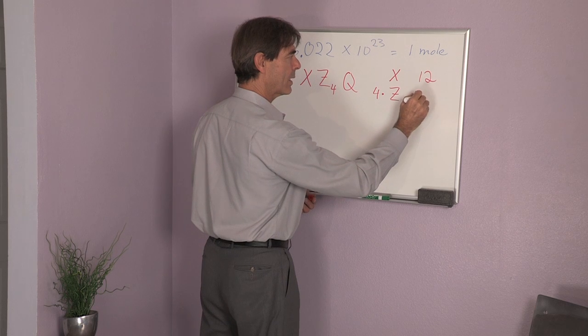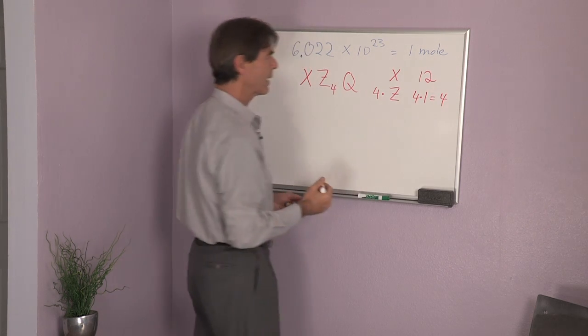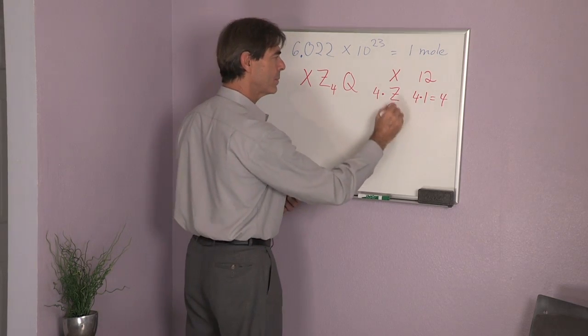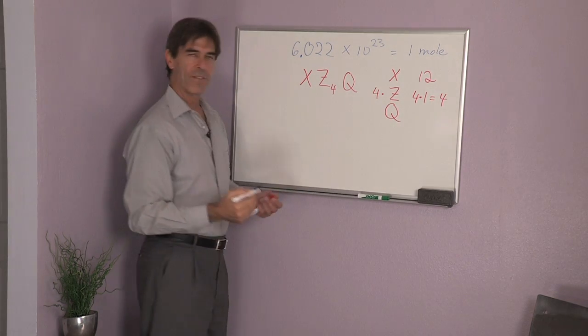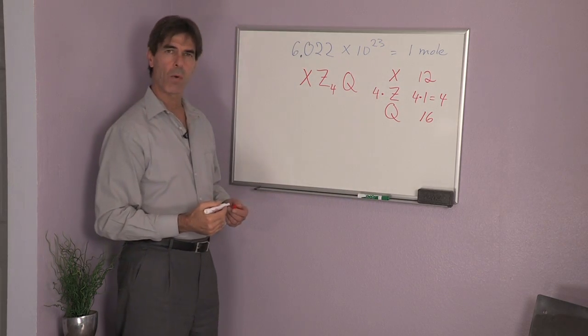So I have four times one, or four. And my substance Q might very well have 16 grams per mole.